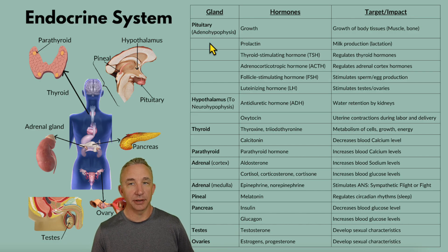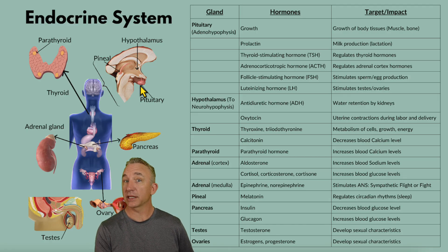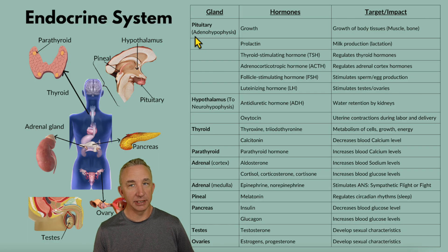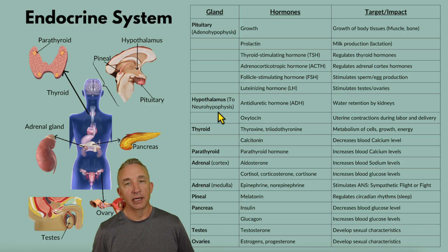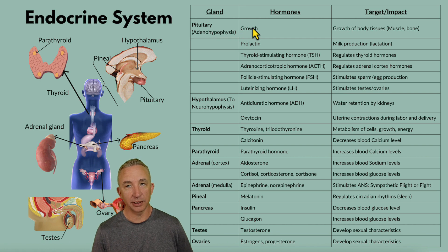We start with the pituitary because it does the most. It looks like a cherry as it hangs down, and we refer to it as the master gland along with the hypothalamus. The pituitary can be divided into two regions: the adenohypophysis and the neurohypophysis. Adenohypophysis is the anterior pituitary — just remember A for A. The neurohypophysis is the posterior half. In the middle histologically there's a pars intermedia, but these two major regions are the focus. The pituitary is controlled by the hypothalamus, which uses regulatory hormones, and it has a lot to do with growth, development, and reproduction.